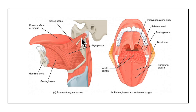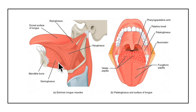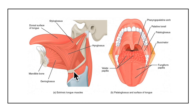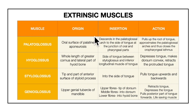The styloglossus muscle originates from the tip and anterior surface of the styloid process. It inserts into the side of the tongue. Its action is to pull the tongue upward and backward, retracting the tongue. The genioglossus is a fan-shaped bulky muscle that originates from the upper genial tubercle of the mandible. It inserts as three fibers: the upper fibers into the tip of the tongue, the middle fibers into the dorsum, and the lower fibers into the hyoid bone. Its action is to depress the tongue, pull the posterior part forwards, and protrude the tongue — it is basically a life-saving muscle.